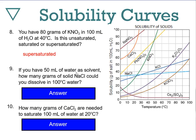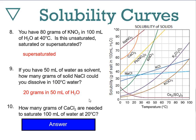If you have 50 mL of water as solvent, how many grams of sodium chloride would dissolve at 100°C? At 100°C, sodium chloride's solubility is still about 40 grams per 100 mL. With only 50 mL, that's half the value — roughly 20 grams of sodium chloride would dissolve in 50 mL of water.